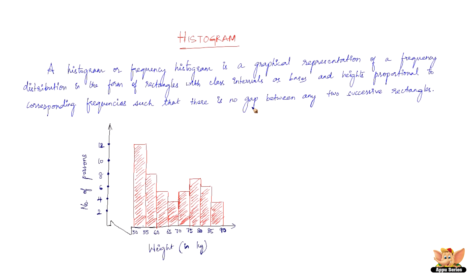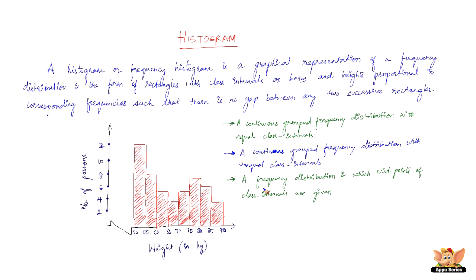Now there are various types in histogram such as: The first one is a continuous grouped frequency distribution with equal class intervals. And then the second type of frequency distribution would be a continuous grouped frequency distribution with unequal class intervals. Then another type of frequency distribution we have here is a frequency distribution in which midpoints of class intervals are given.